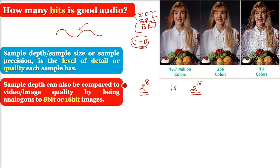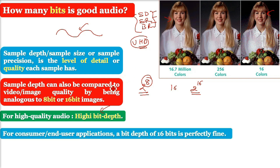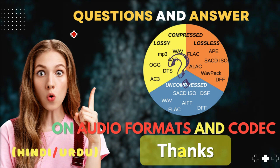More bits means more audio content and higher quality. For consumer use, a bit depth of 16 bits is perfectly acceptable. However, for professional work — sound recording, mixing, mastering, or professional video editing — a bit depth of 24 bits is a must. The core idea is: the more bits, the better the audio quality.